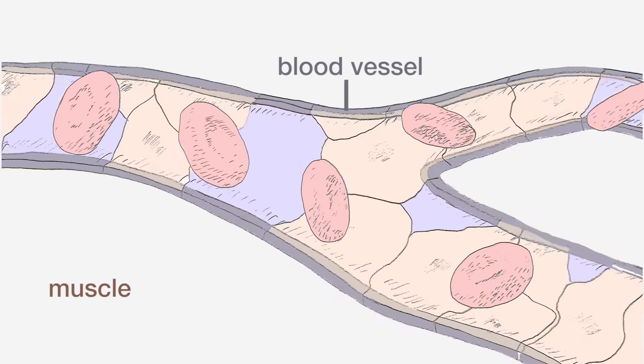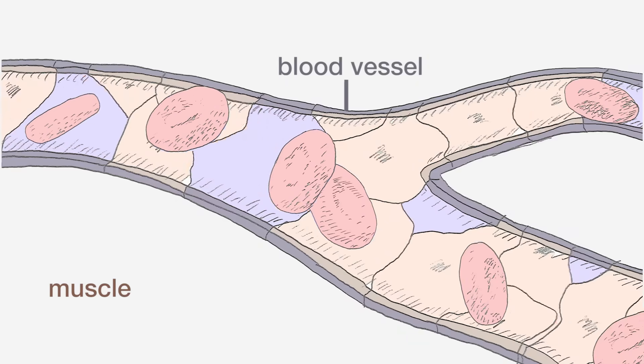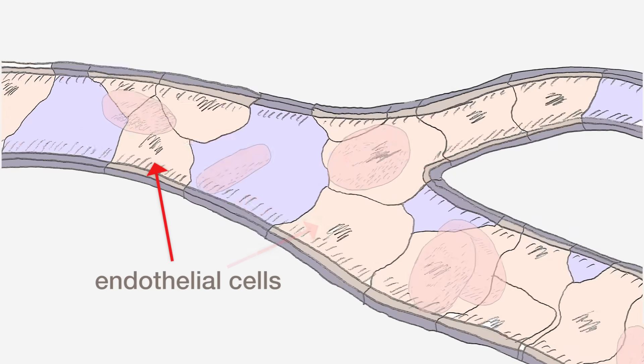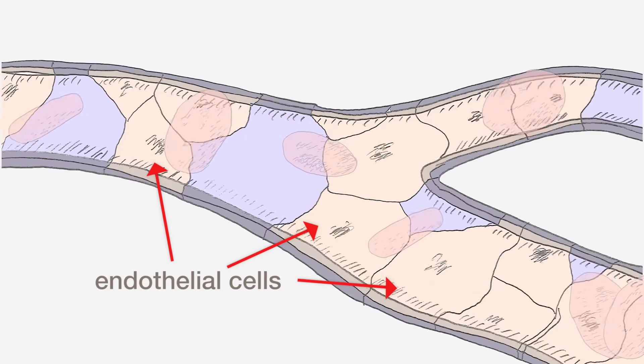The new study has unraveled the cascade of interactions between blood vessels and muscles. Endothelial cells, which line the walls of blood vessels, are essential for the health and growth of the vessels.